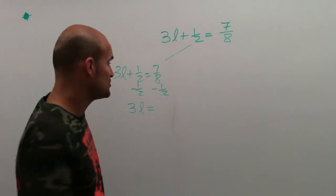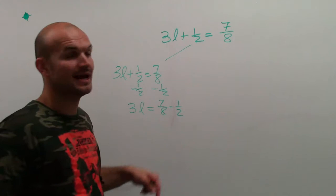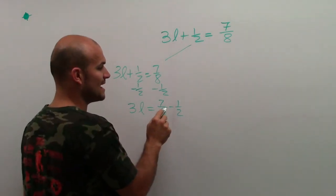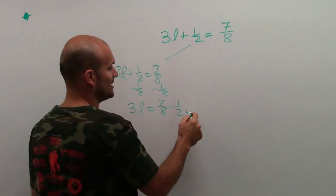I'm not going to go too far into this, but remember, when you're subtracting fractions, you've got to have them as the same denominator. So since my least common denominator is 8, I need to get my 2 to be an 8. So I'm going to multiply by 4 over 4.